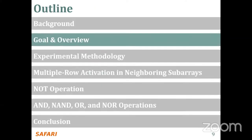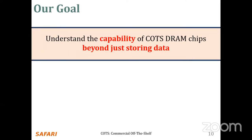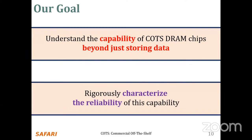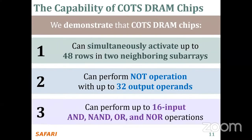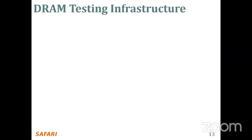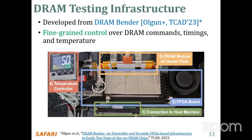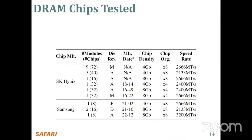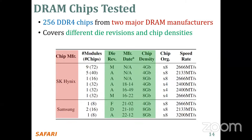Now let's go through our goal and the overview of the study. Our goal is to understand the capability of DRAM chips beyond just storing data, and to rigorously characterize these computational capabilities in neighboring subarrays. We use an FPGA-based DDR4 testing infrastructure developed by DRAM vendors that enables fine-grained control over DRAM commands, timings, and temperature. In this study, we test a total of 256 DDR4 chips from two major manufacturers, covering different die revisions and chip densities.